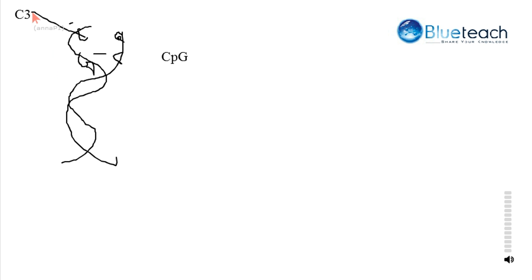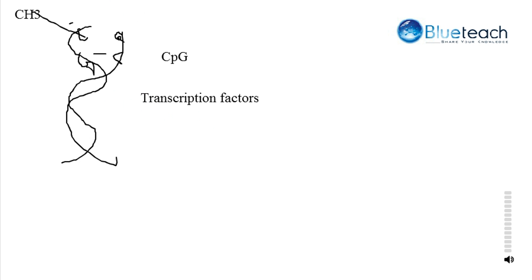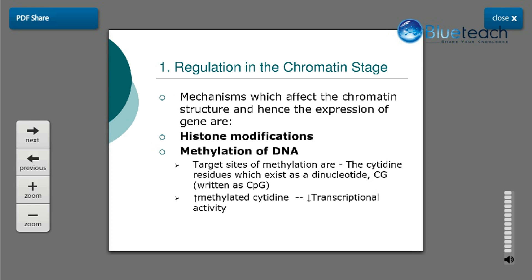As a result of methylation, various transcription factors that are able to bind at these CG-rich regions require a free cytosine residue. Once the cytosine has been methylated, these transcription factors fail to recognize it, and as a result the transcriptional level is decreased. Greater methylation leads to lesser transcription. The target sites for methylation are cytosine residues which exist as dinucleotides CpG, and increased methylation of cytosine residues reduces transcriptional activity.